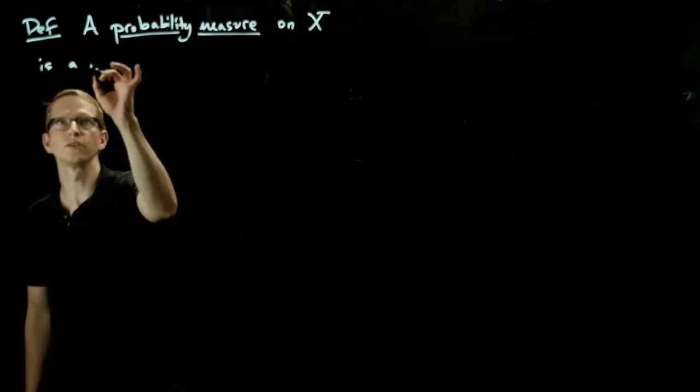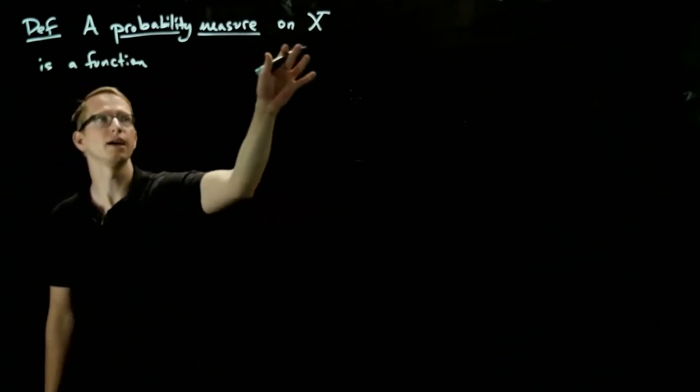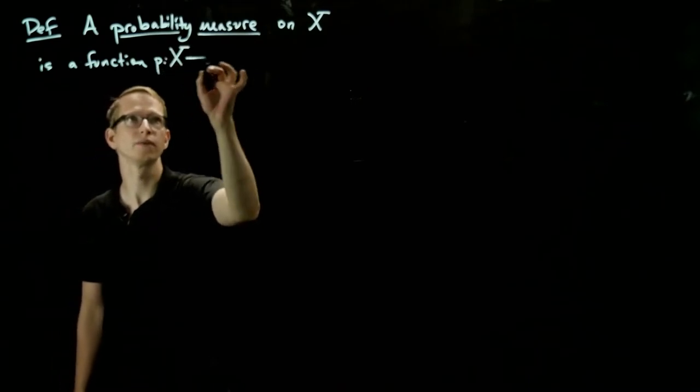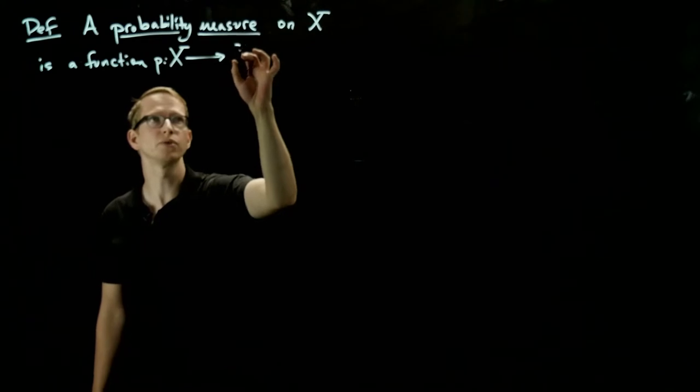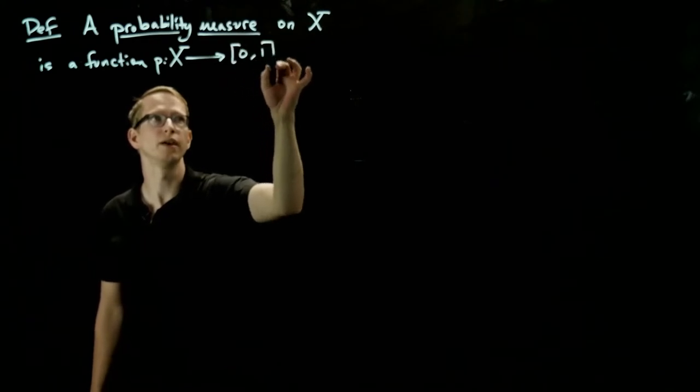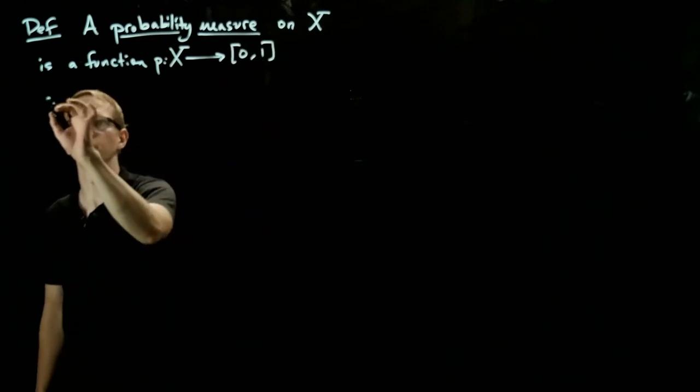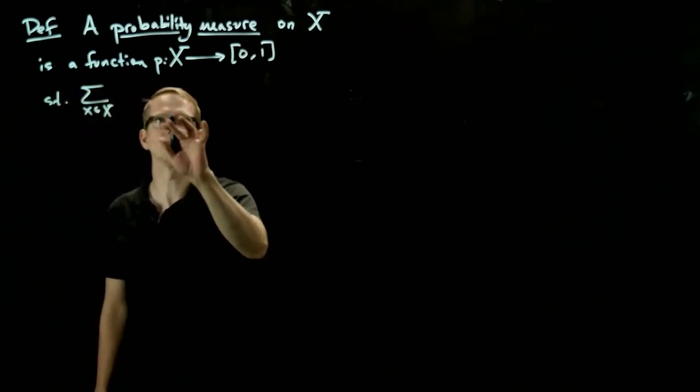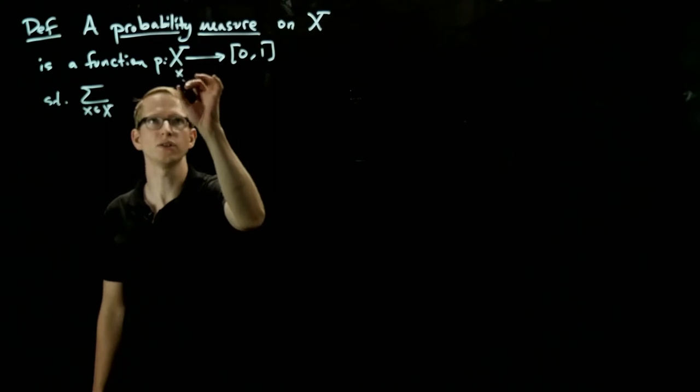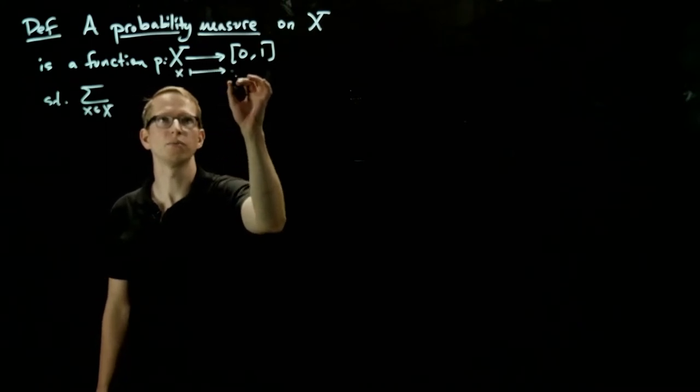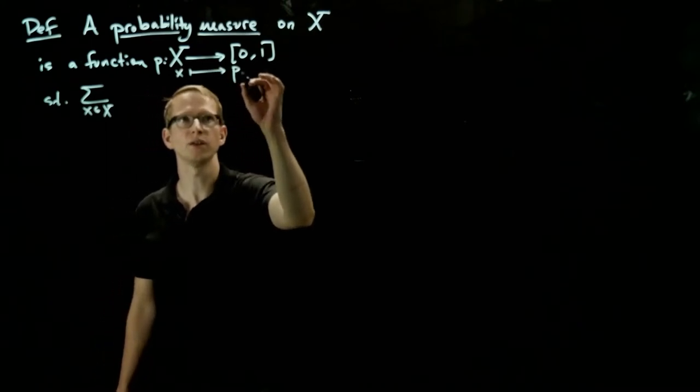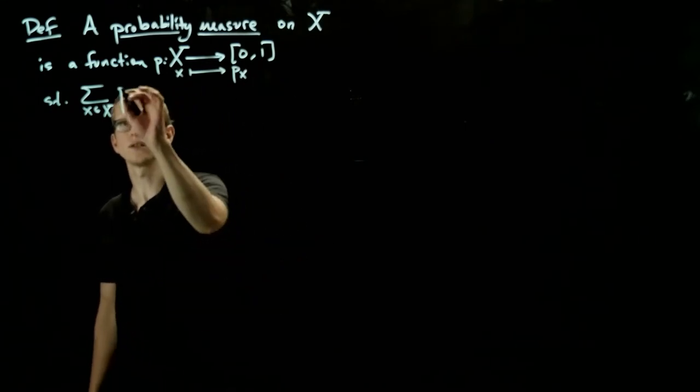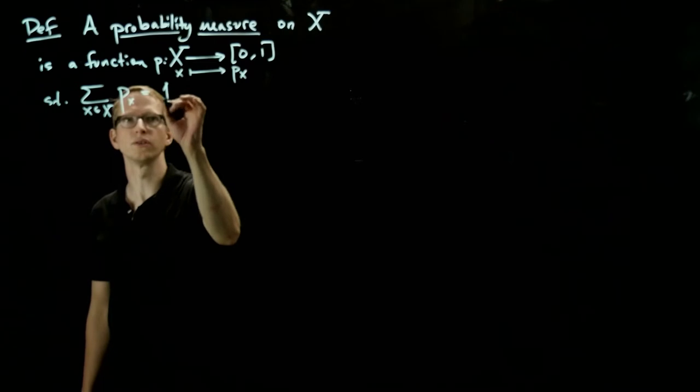is a function that takes every element of X and gives me a number between 0 and 1, and the sum of these numbers when I sum over all elements in X... Let me set notation that when I apply this probability measure to x, instead of writing p of x, I will write p subscript x, so such that the sum of these numbers equals 1.